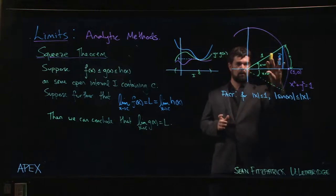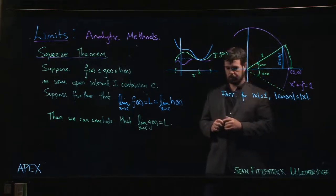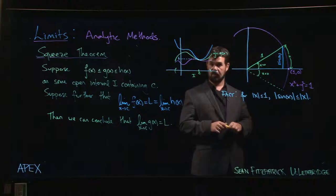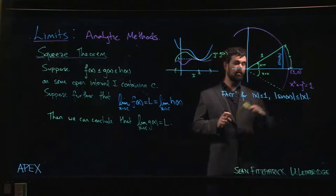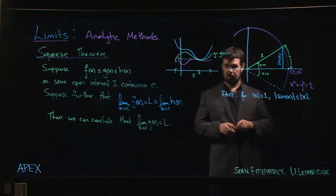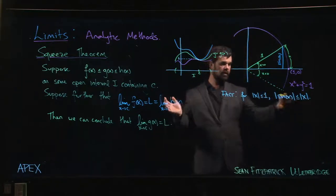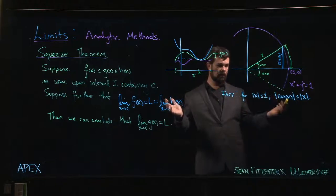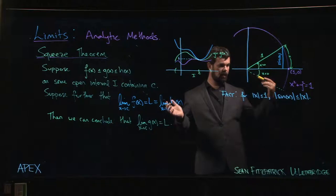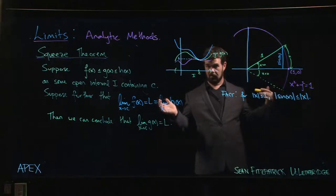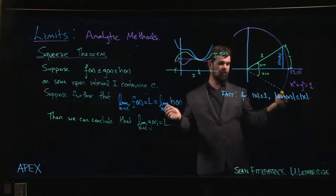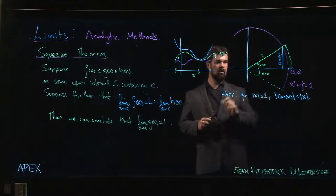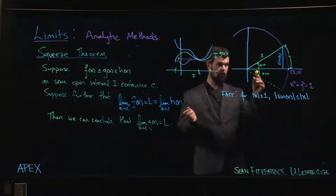So the first thing we're going to do is we're going to look at this diagram here and we're going to use it to convince ourselves of this fact that for absolute value of x less than or equal to 1, the absolute value of sine x is always less than or equal to the absolute value of x. In fact, this statement is true for any x value because once you have it for x between minus 1 and 1, if the absolute value of x is bigger than 1, we know that the absolute value of sine can never be bigger than 1 because sine always goes between minus 1 and 1.